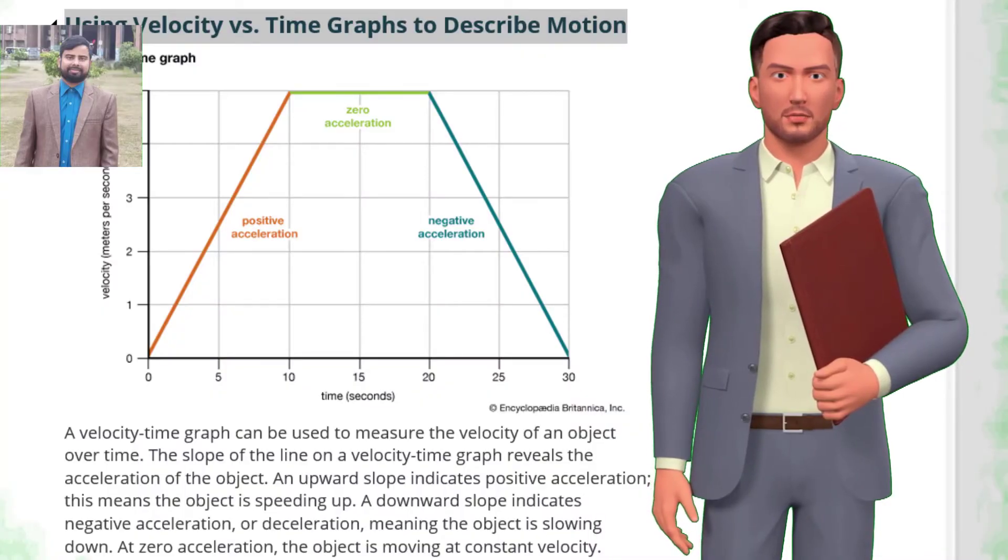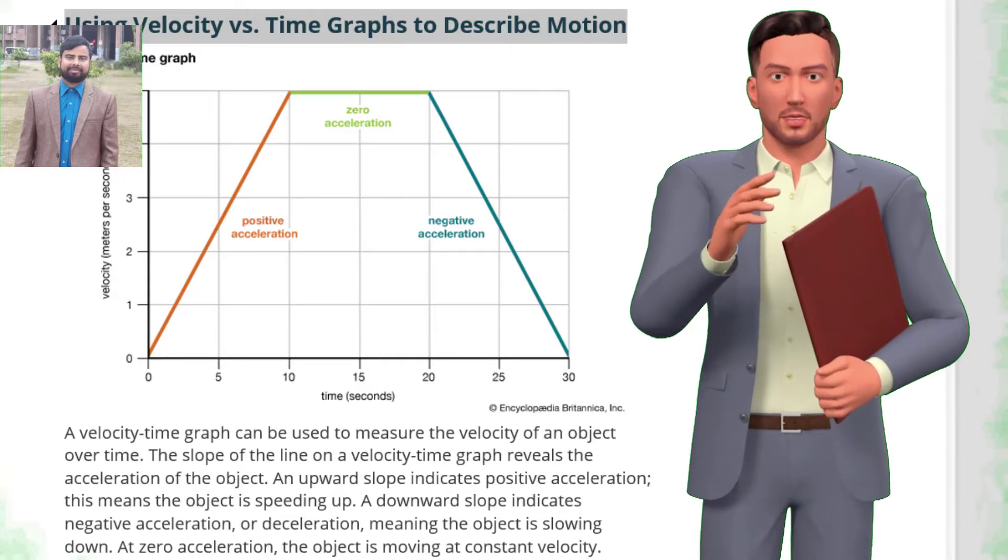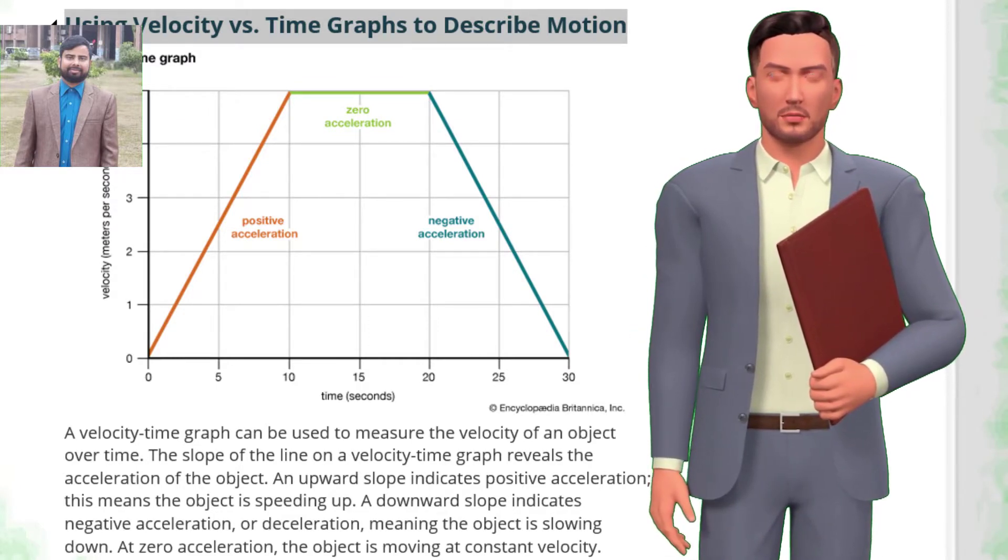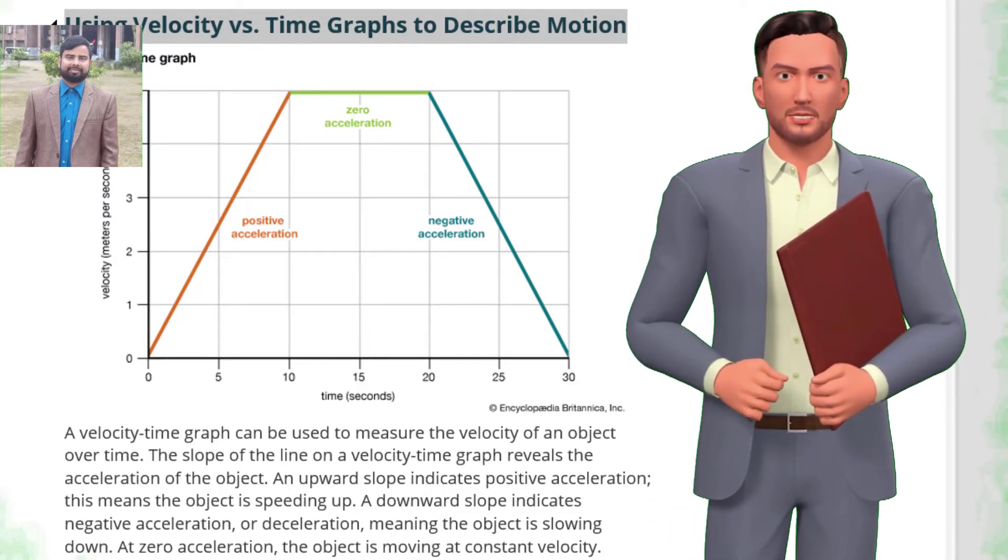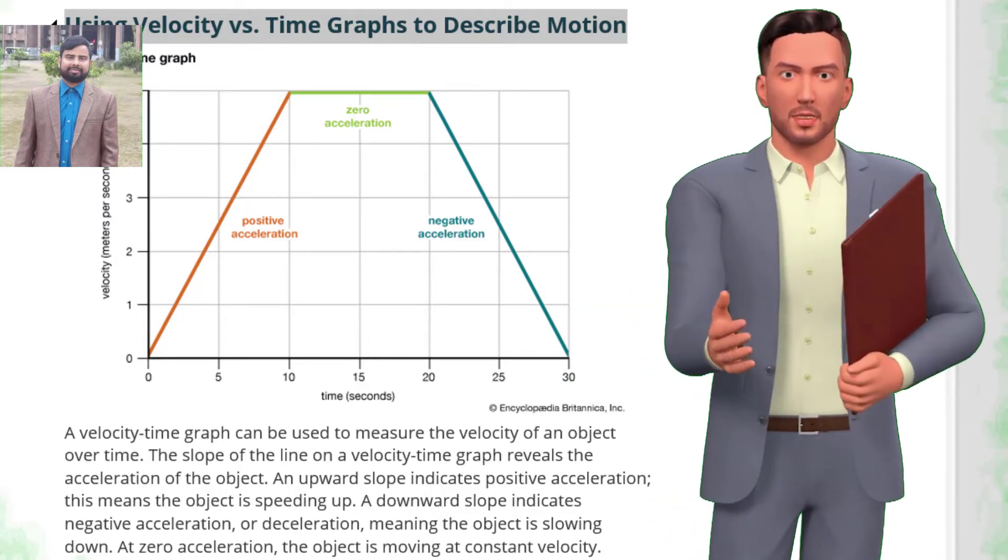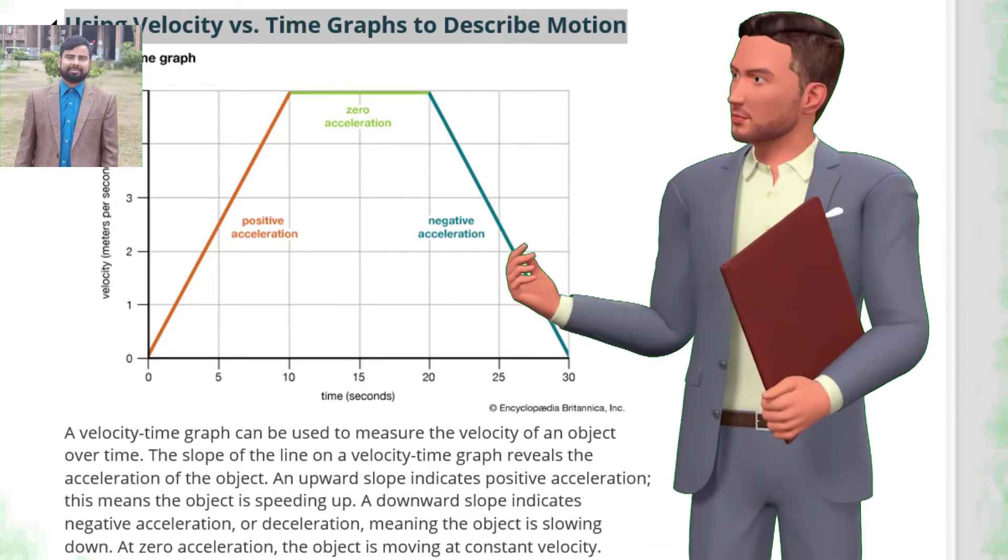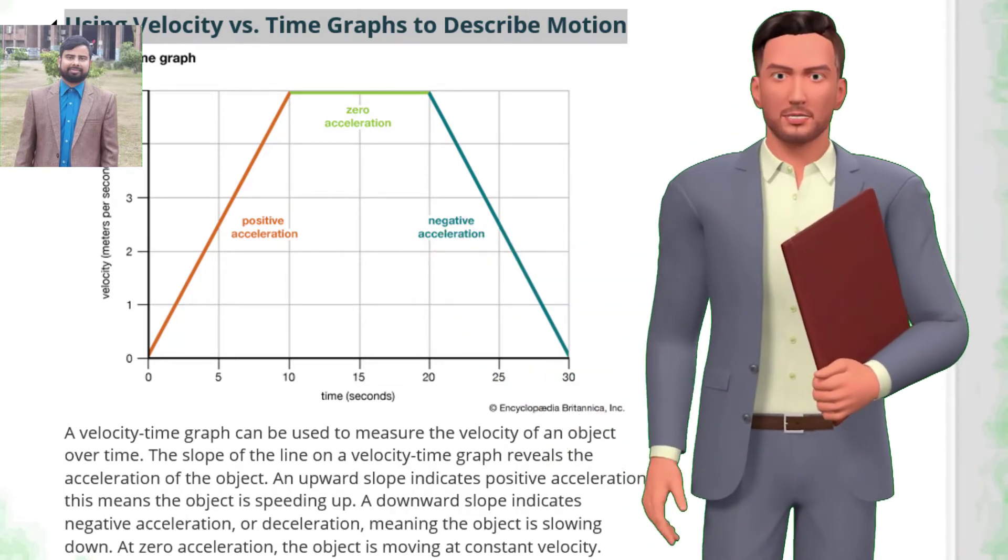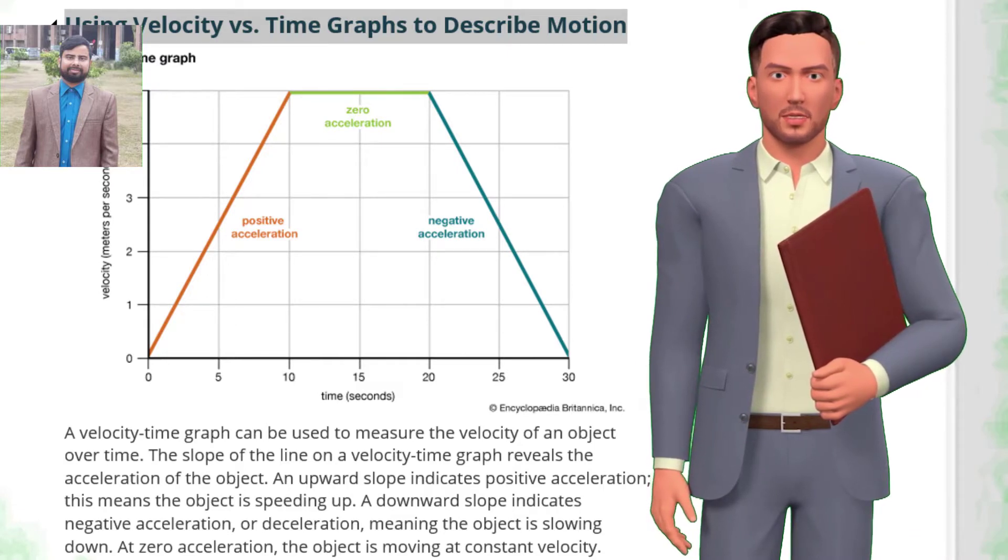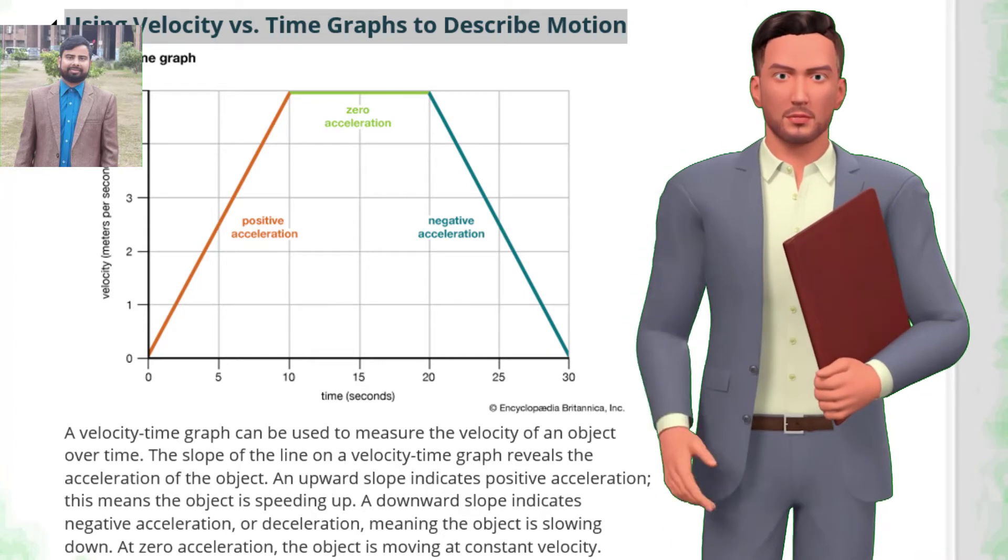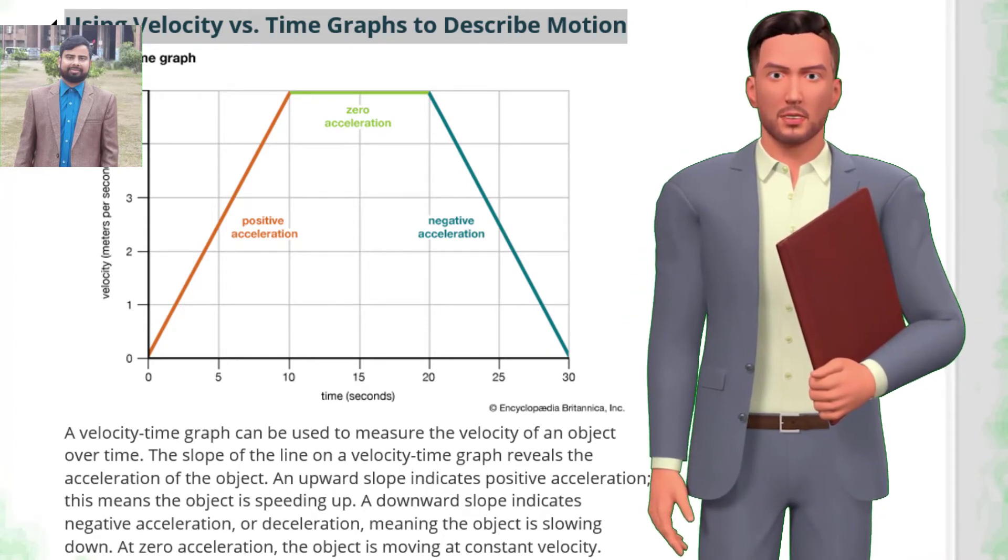Using velocity versus time graphs to describe motion. A velocity-time graph can be used to measure the velocity of an object over time. The slope of the line on a velocity-time graph reveals the acceleration of the object. An upward slope indicates positive acceleration, meaning the object is speeding up. A downward slope indicates negative acceleration, or deceleration, meaning the object is slowing down. At zero acceleration, the object is moving at a constant velocity.